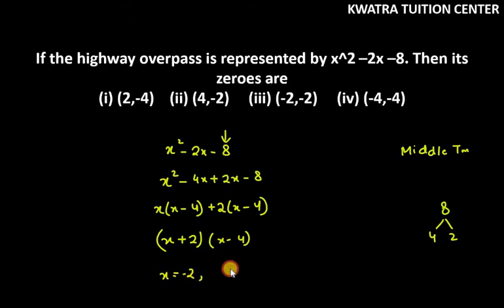So x equals minus 2 and the other time x is 4. So two zeros are 4 or minus 2, which is the second part.